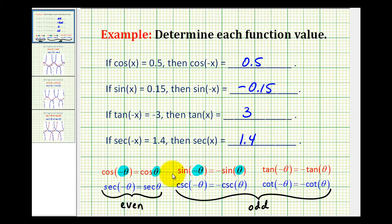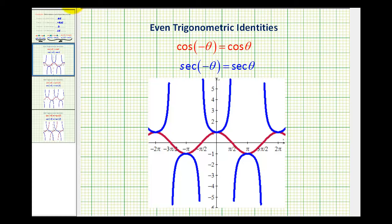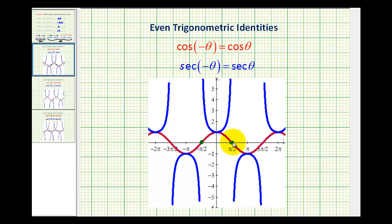Let's take a look at these even and odd identities graphically. The cosine function and secant function are even, which means they're symmetrical across the y-axis — mirror images across the y-axis. Looking at the cosine function, notice f of pi over 2 equals 0, and f of negative pi over 2 is also equal to 0. If we change the sign of the input, the outputs are the same, and the same thing would be true for the secant function.